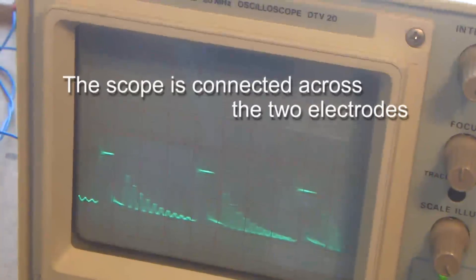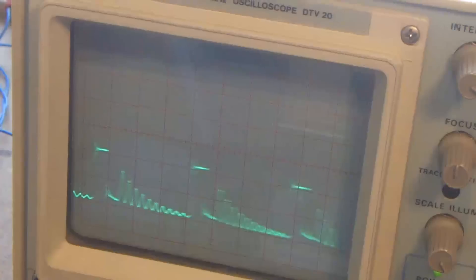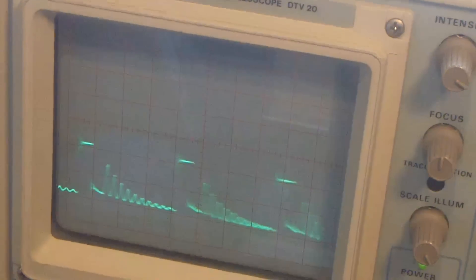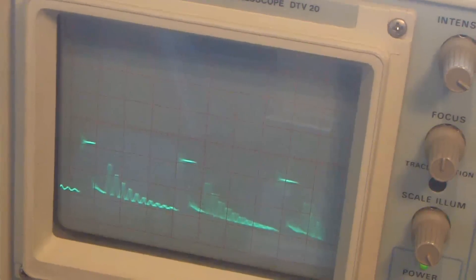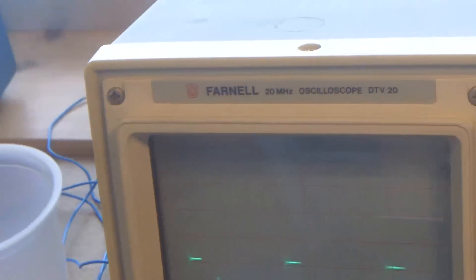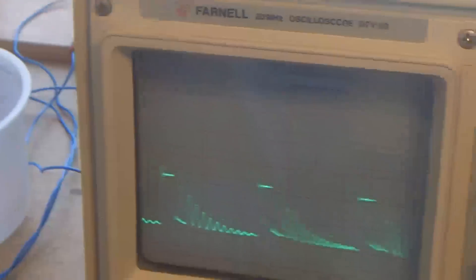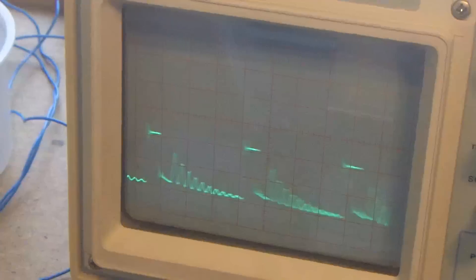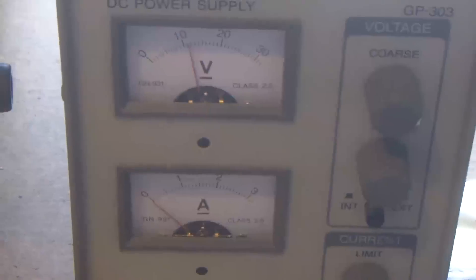Which channel am I on? Channel 2. And I'm on 2 volts per division on, I think, a times 1 probe. No, a times 10 probe. Okay, so that's 20 volts per division there. And that's my power supply.